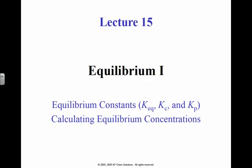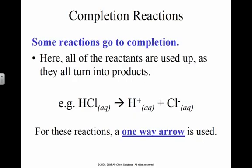Our next unit is going to be on equilibrium. This is a fairly simplistic chapter and shouldn't be that difficult; it's going to go fairly quickly. Some reactions go to completion, which is why we use the one-way arrow. Here, all the reactants are used up to produce the products.